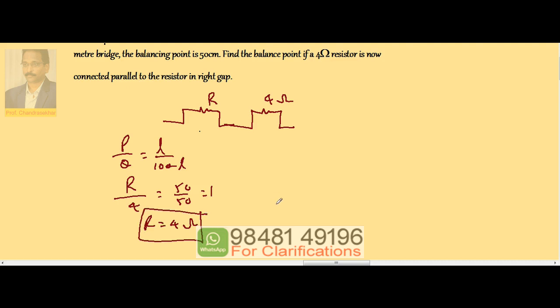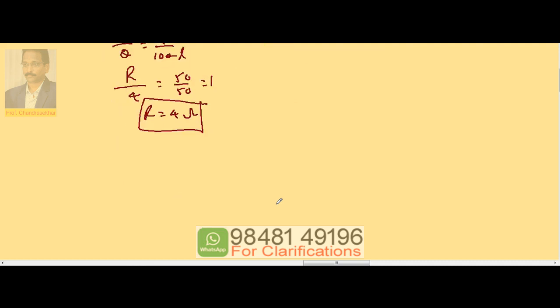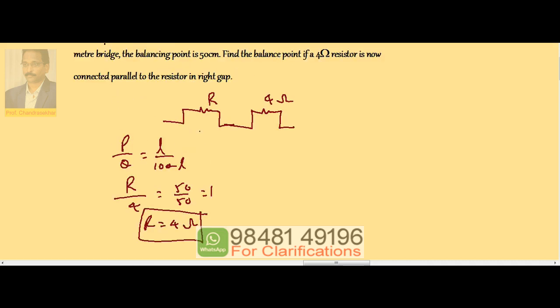Now, a 4 ohm resistor is connected parallel to the resistor in the right gap. To the existing 4 ohm, another 4 ohm is connected in parallel. This equivalent becomes 2.